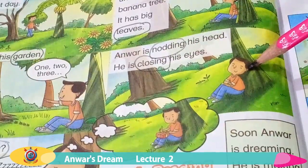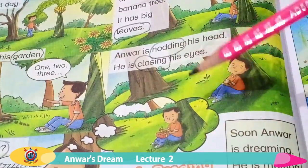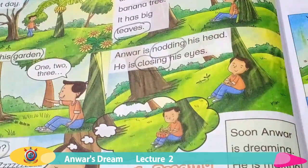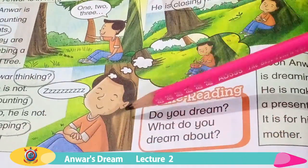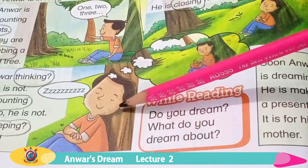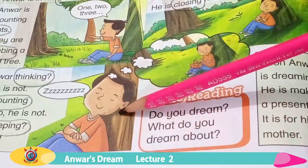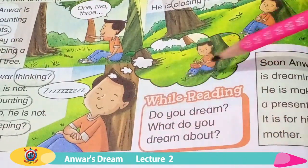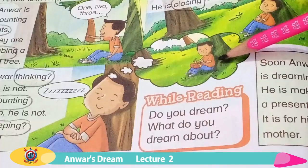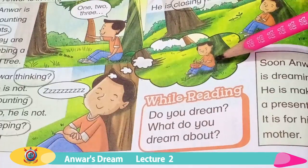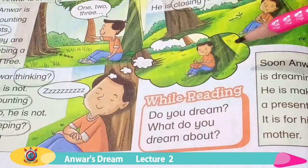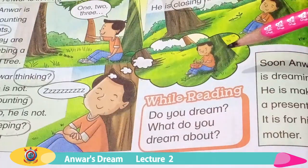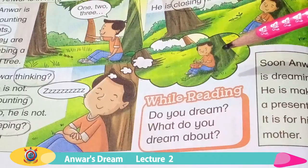Anwar ko neend aa rahi hai. Here Anwar is sleeping — Anwar so raha hai. And he is dreaming. Anwar khwaab dekh raha hai. Let's move towards the next part of the story.